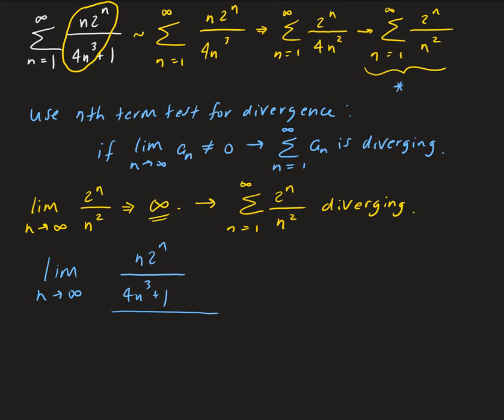all divided by 2 to the n over n squared. Okay, so let's go ahead and simplify this.